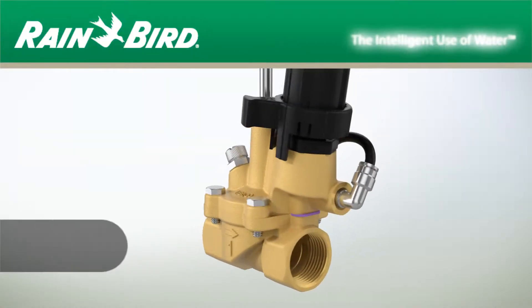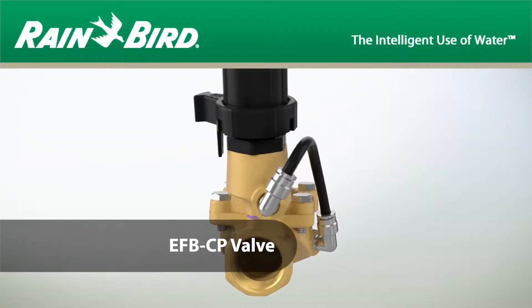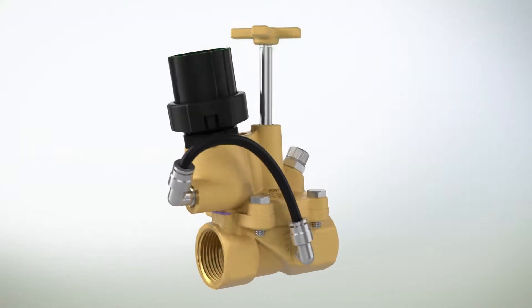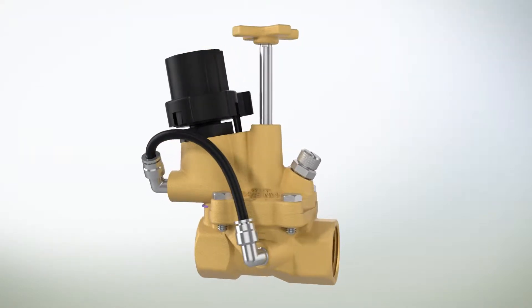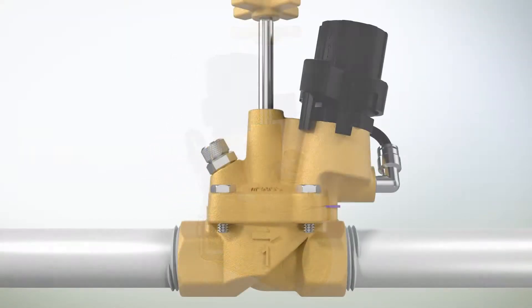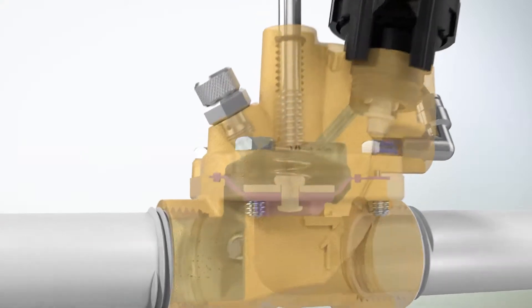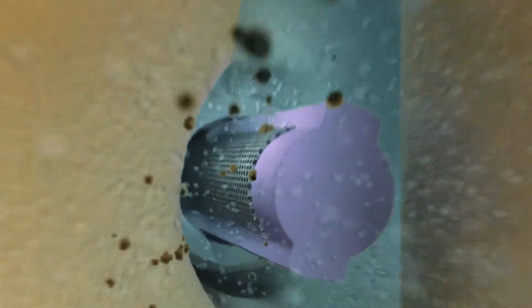Rain Bird's EFBCP brass valves are engineered to deliver years of industrial strength performance for your toughest jobs. Debris doesn't stand a chance against its unique self-flushing filter system. Let's take a look inside to see how it works.